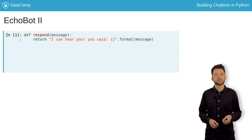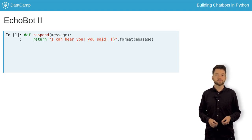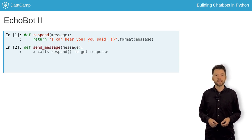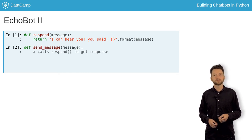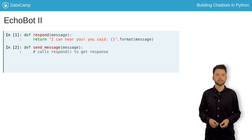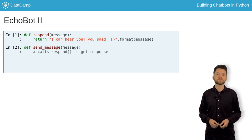To keep track of everything that's being said, we'll define another function called sendMessage. This prints what the user just said, gets the response by calling the respond function, and then prints the bot's response as well.